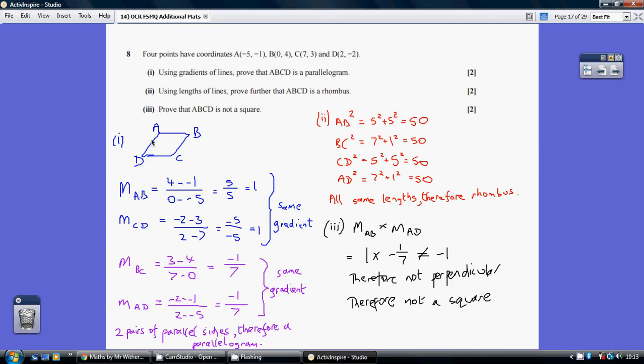You need to work out these four gradients. Remember, gradient is y step over x step. For the gradient from A to B, I've done 4 minus minus 1 over 0 minus minus 5, which gives 5 over 5 equals 1, and so on. I've worked through all four gradients, showing AB and CD have the same gradient, and BC and AD have the same gradient. Two pairs of parallel sides, therefore a parallelogram.